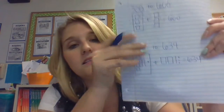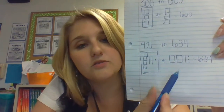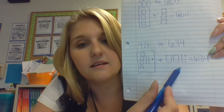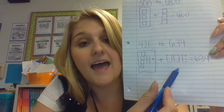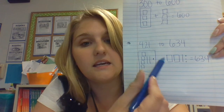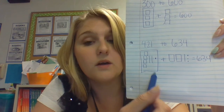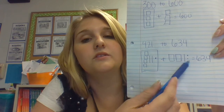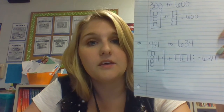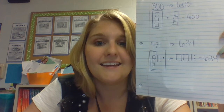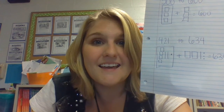And I can do an equal sign and write 634. So my answer is actually 213, because if I added 213 to 421, that would give me 634. So this is another method or another way to figure out how to find a missing addend. Have a good day!